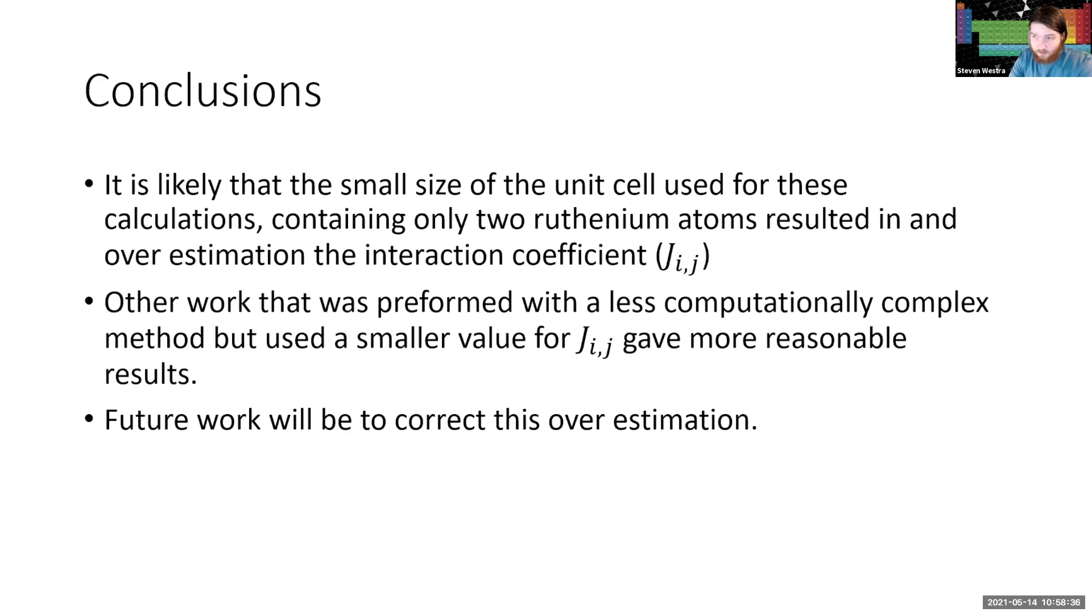It is likely that the small size of the unit cell, since we are only working with two ruthenium atoms to speed the calculations along, likely caused an overestimation of the interaction constant between the spins and that this is throwing off everything. Other work that was performed using a less computationally rigorous method gave much more reasonable figures when using much smaller values for J. And future work on this would be to redo calculations and correct for this overestimation to hopefully get a better fit for data.